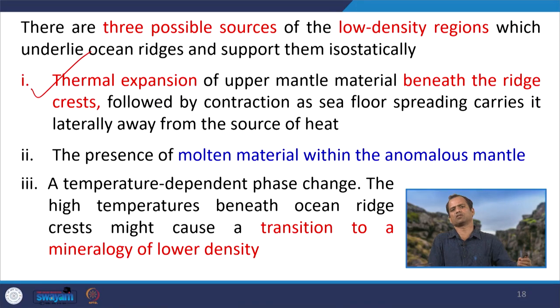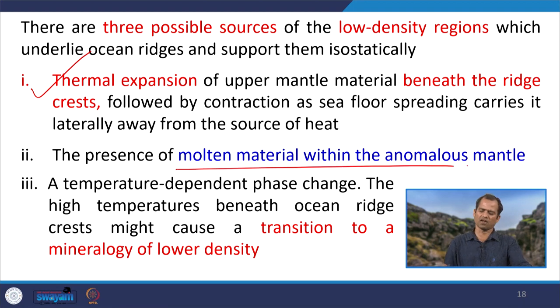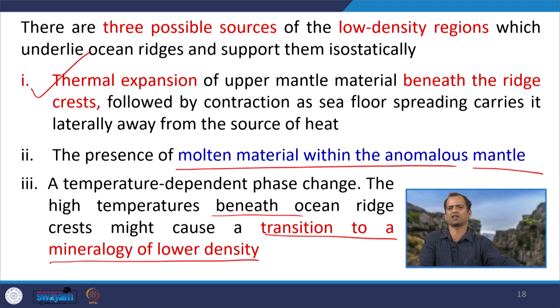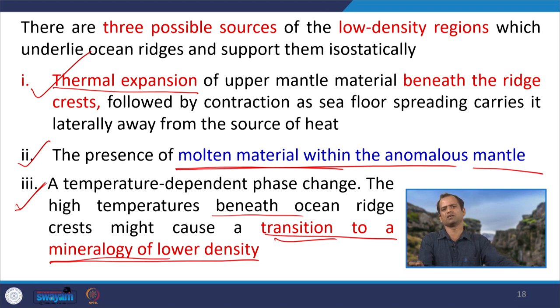The low velocity zone along the mid-oceanic ridge axis can be explained by three possible reasons. First, thermal expansion: the high temperature zone has molten rock, and the surrounding rocks expand thermally, with upper mantle material beneath the ridge crest later contracting as seafloor spreading carries it laterally away from the heat source. Second, the presence of molten material — obviously the P-wave velocity will decrease in molten material. Third, a phase or mineralogy transition: with high temperature surrounded by low temperature there is a mineral phase transition. These three — thermal expansion, presence of molten material, and phase transition — are the best possible explanations for the low velocity zone along the mid-oceanic ridge system.